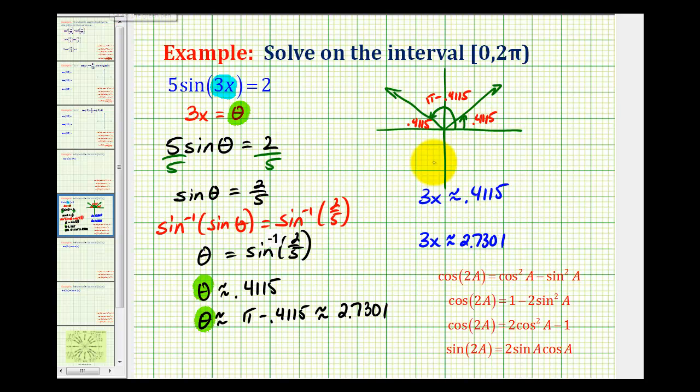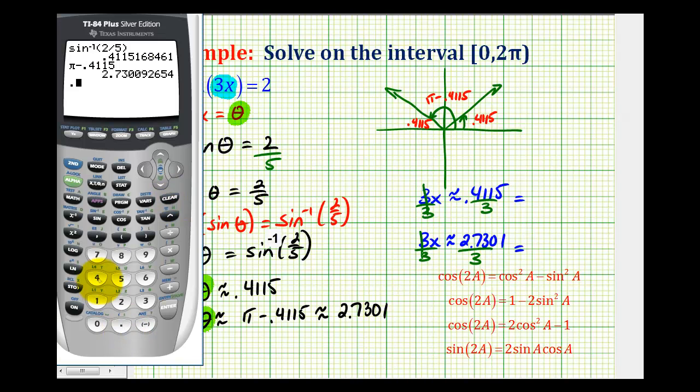To solve for x, we'll divide both sides by 3 for both equations. Let's go back to the calculator. We have 0.4115 divided by 3.